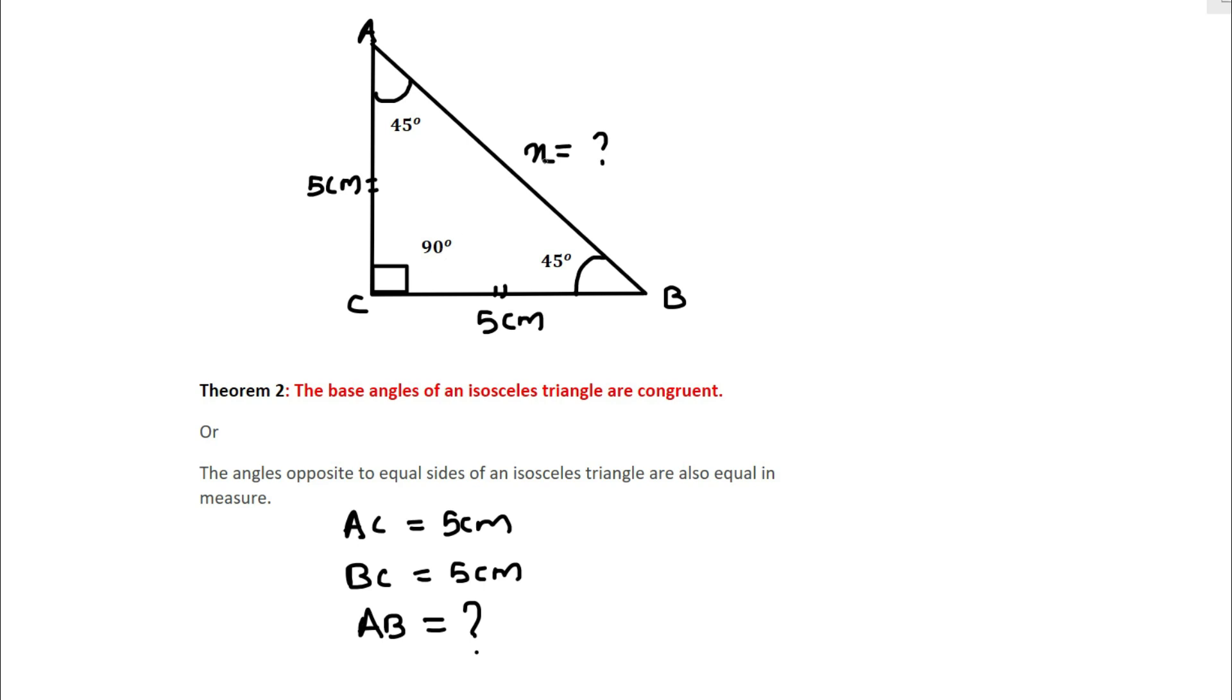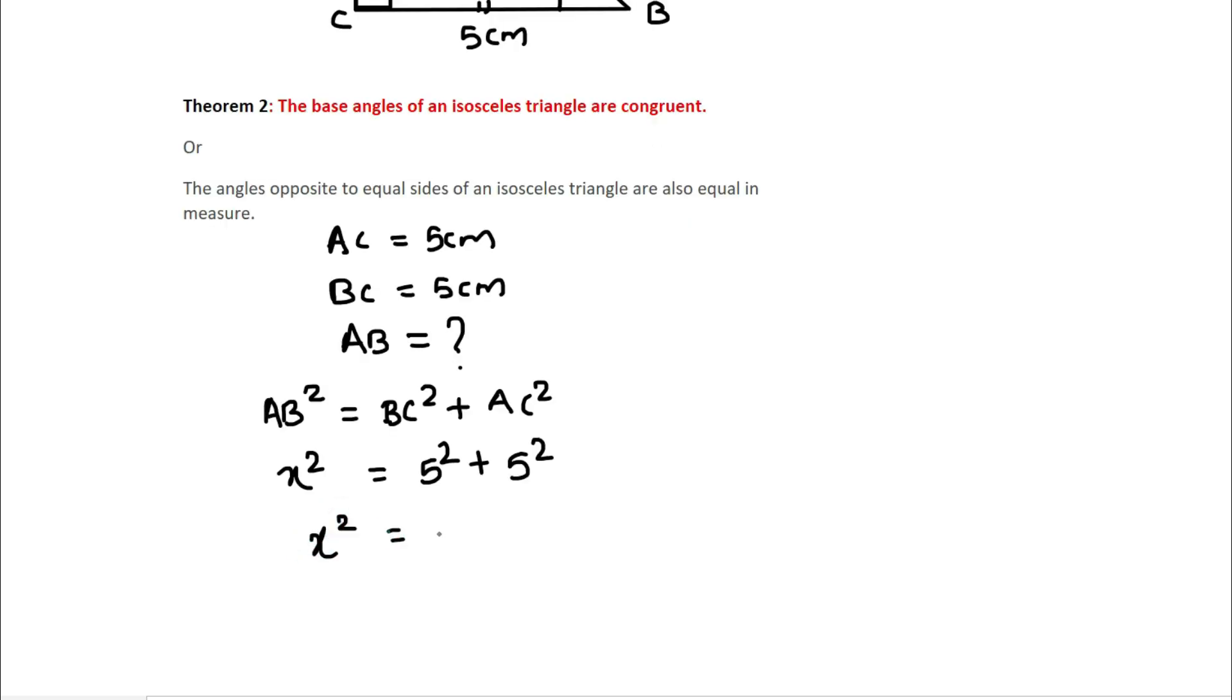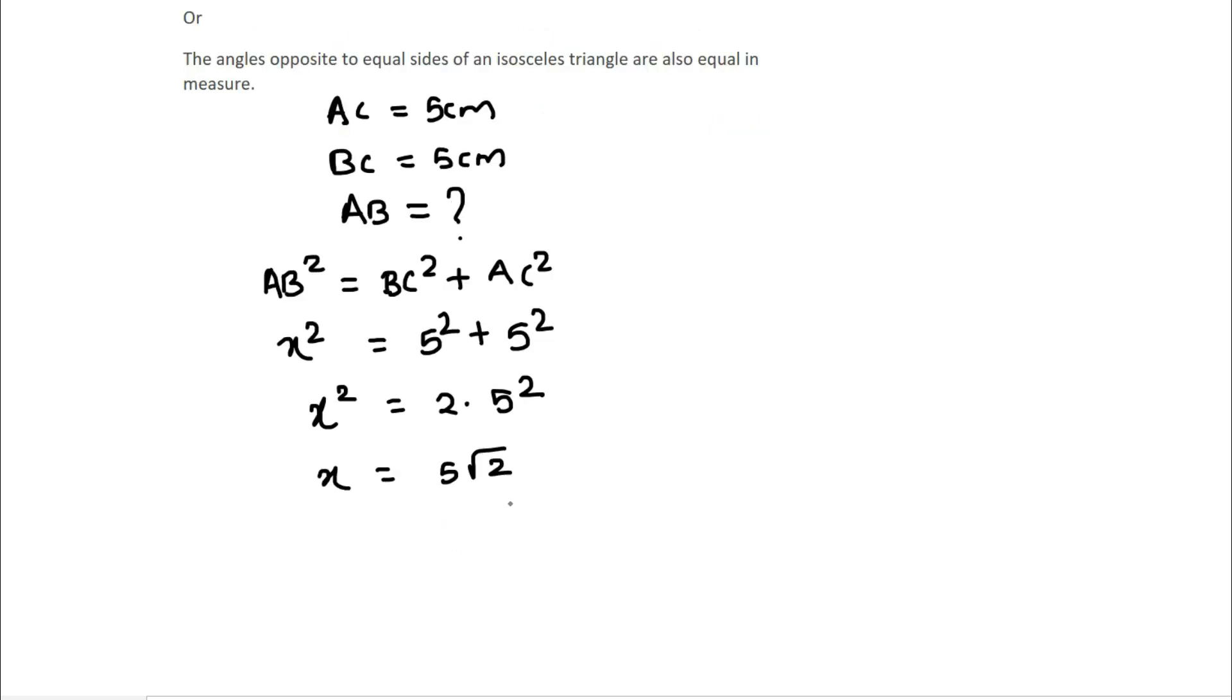According to the Pythagorean theorem, AB² = BC² + AC². AB² is x², BC² is 5², and AC² is also 5². So x² = 2 × 5². Taking the square root of both sides, we have x = 5√2, which is our answer.